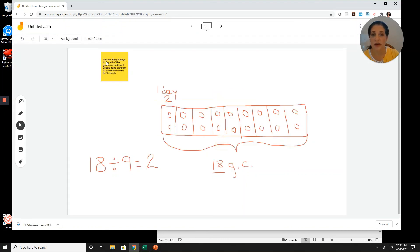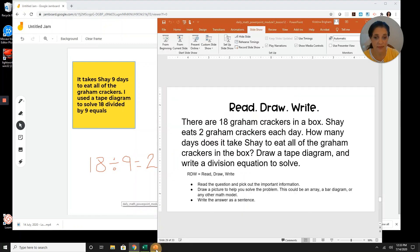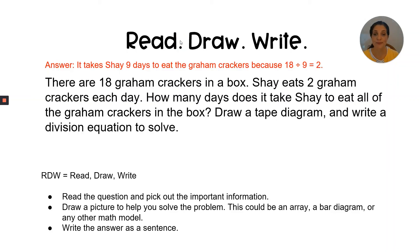I've drawn it out and written my answer. Now I can go to the presentation and see if I got it correctly. The answer: it takes Shay nine days to eat the graham crackers because 18 divided by nine equals two. So I answered it correctly. My wording does not have to exactly match the answer — just do the best you can at your level.